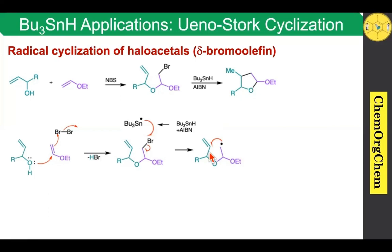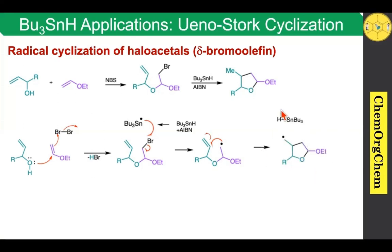Remember this point: small ring is favored to form compared to the larger ring system. So this radical attacks here, which produces one more new carbon-centered radical. This readily abstracts the proton from tributyltin hydride, which produces the corresponding tetrahydrofuran product.